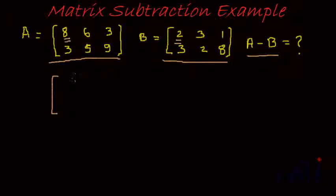So in this case, A11 which is 8, B11 which is 2, so 8 minus 2 is 6. 6 minus 3 will be 3, 3 minus 1 which is 2, 3 minus 3 is 0, 5 minus 2 which will be 3 again, and 9 minus 8 which is 1. So this gives us A minus B.